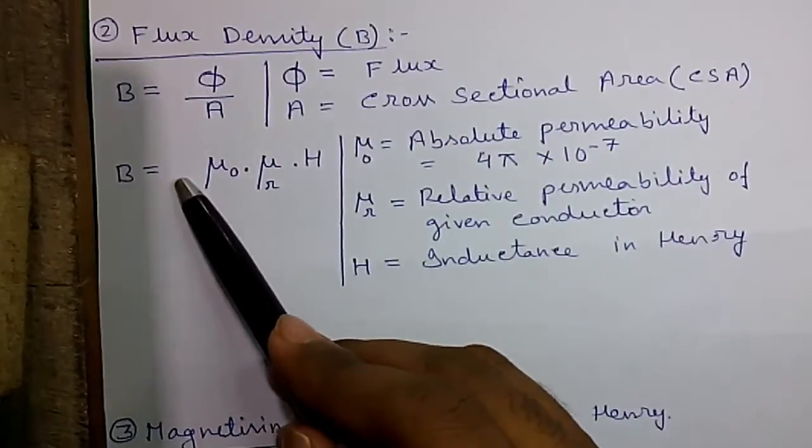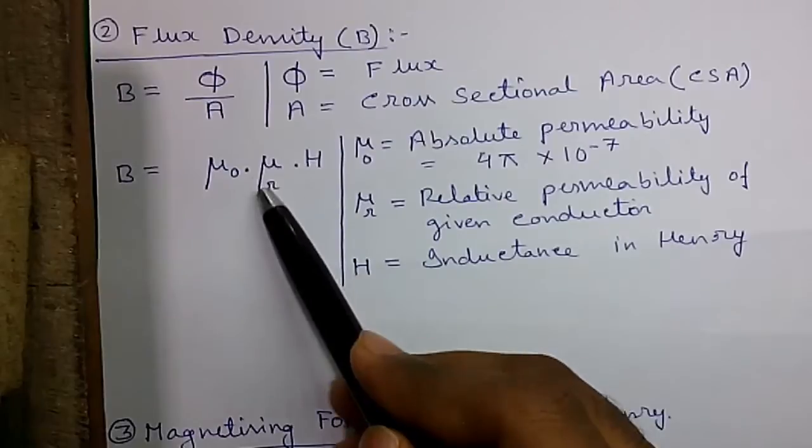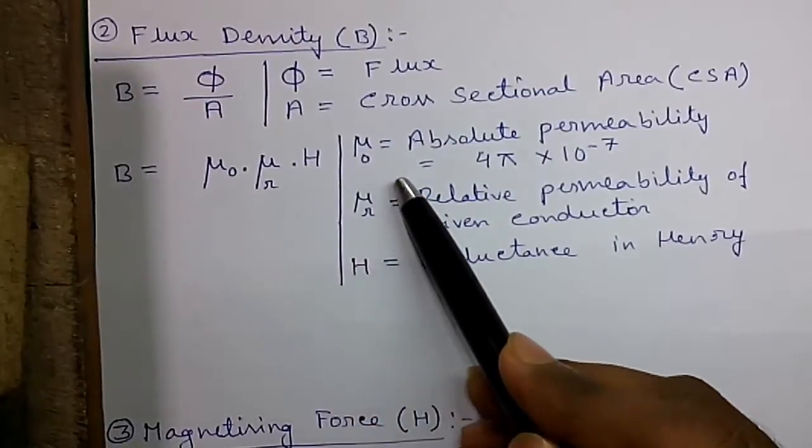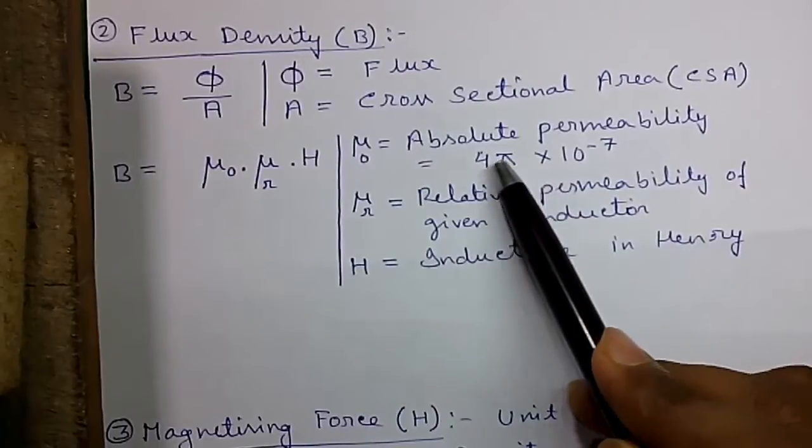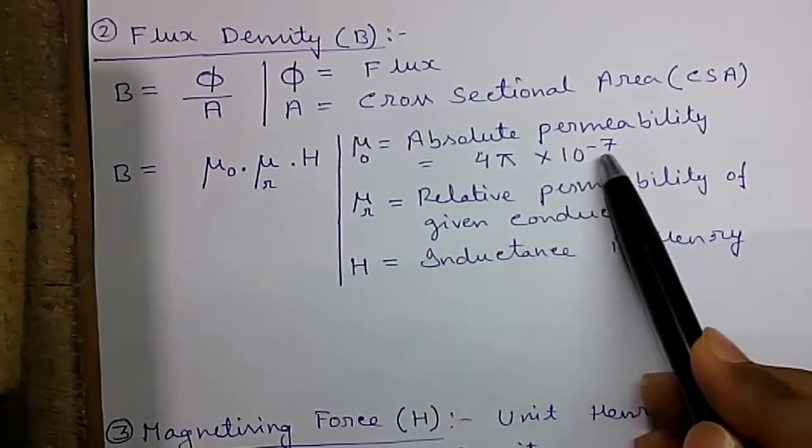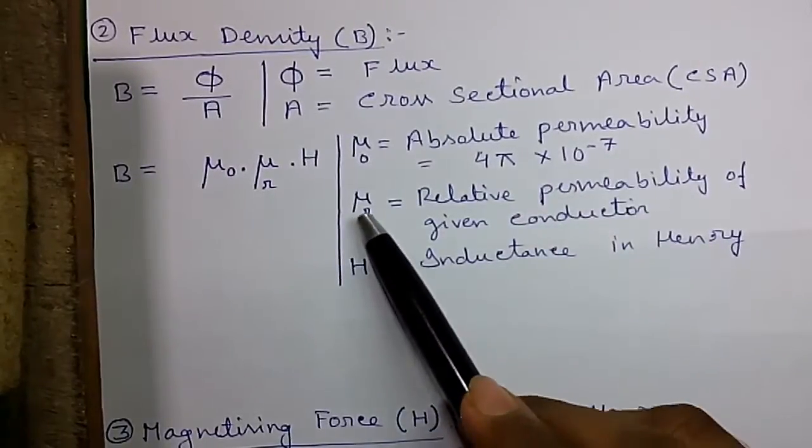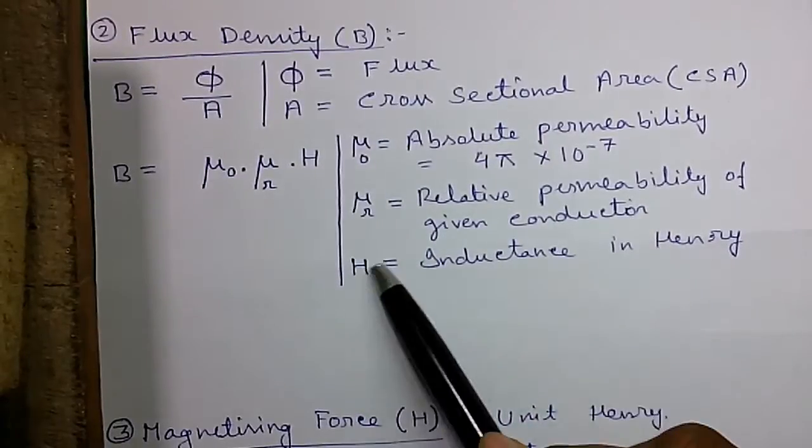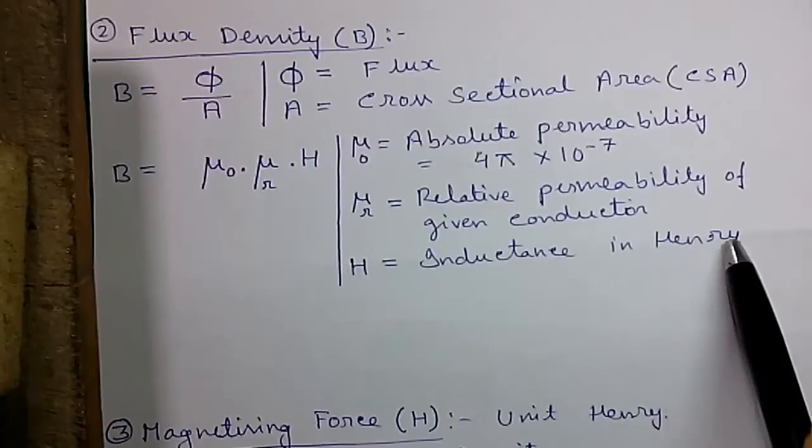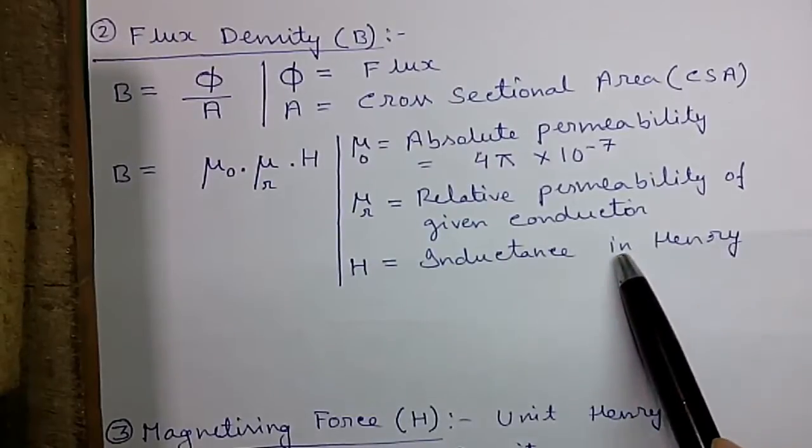Another formula B equals to mu zero into mu R into H, where mu zero is the absolute permeability. It has a fixed value that is 4 pi into 10 to the power minus 7 and mu R is the relative permeability of the given conductor and H is the inductance in Henry.